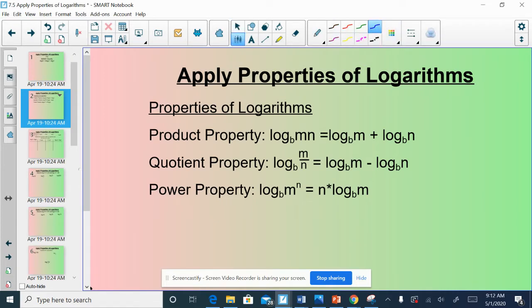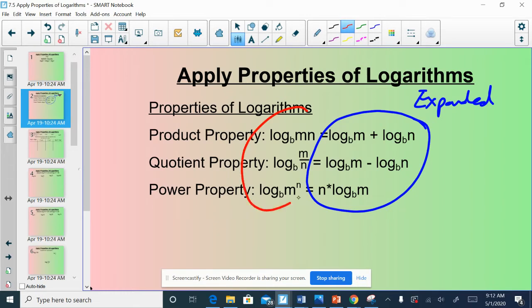The product property, the quotient property, and the power property. What these properties allow us to do is either condense expressions or expand expressions. That's going to be the language that's used surrounding these formulas. This version over here is the expanded version, and this side over here we would call the condensed version. Essentially, what we're able to do is we're able to either be given logs in condensed form and convert them into expanded form, or vice versa.